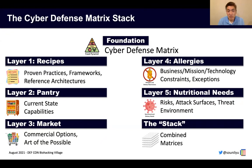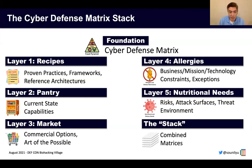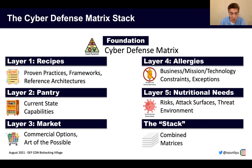The first layer is a recipe — these are proven practices, frameworks, and architectures that we have to abide by. This represents the things we have to do, the requirements we have to meet to have a robust cybersecurity environment. The next layer is our pantry — basically, what do you have today in your existing portfolio capabilities that can help secure your environment? The third layer is the market — what's available from vendors to help you fulfill the recipe that you're trying to make?